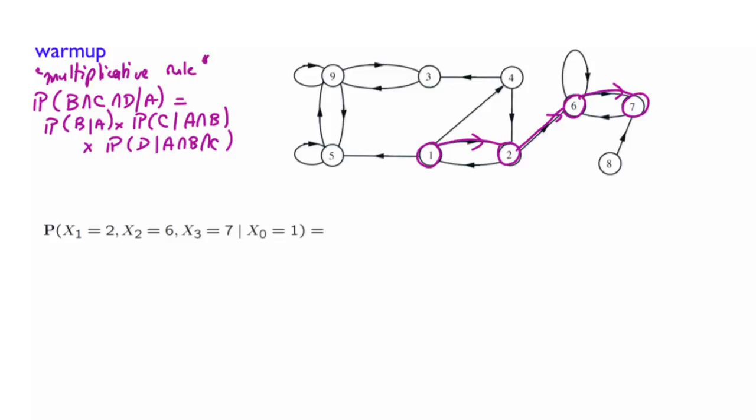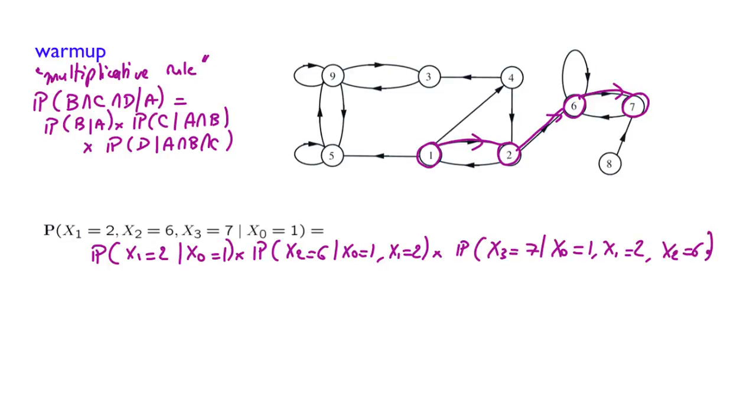So let's do it. This is going to be equals to the probability that X₁ equals 2 given X₀ equals 1, times the probability that X₂ equals 6 given X₀ equals 1 and X₁ equals 2, times the probability that X₃ equals 7 given X₀ equals 1, X₁ equals 2, and X₂ equals 6. So multiplication rule.